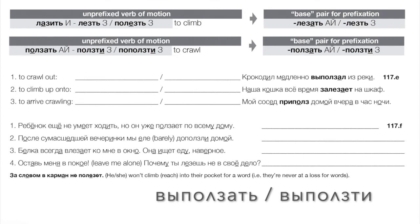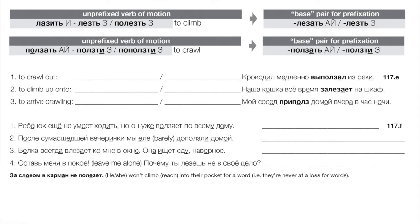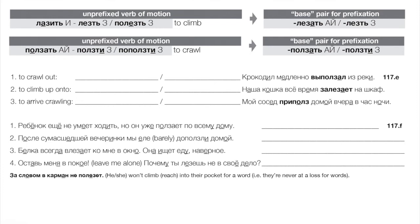To crawl out: выползать/выползти. Example: крокодил медленно выполз из реки — the crocodile was slowly crawling out of the river. To crawl up onto something: залезать/залезть — the за prefix gives that sense of going up and hooking over horizontally onto the top. Example: наша кошка всё время залезает на шкаф — our cat is always crawling up onto the cabinet.